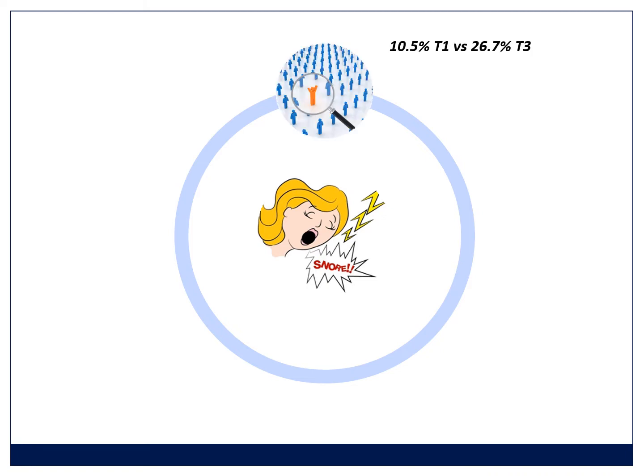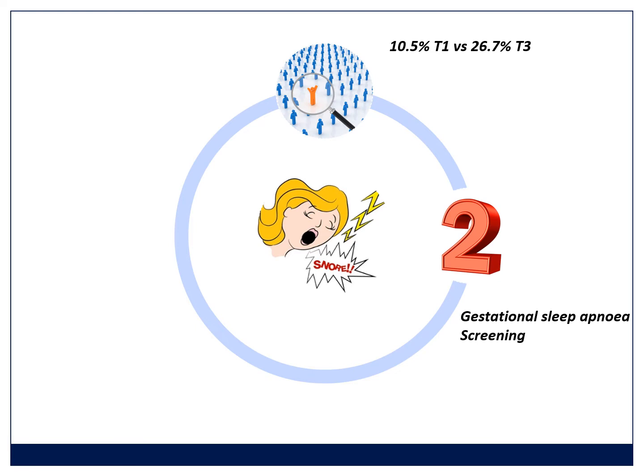One extra risk I want to mention is that these patients get gestational sleep apnea. Obesity is an important risk factor for obstructive sleep apnea. This is about 10% in the first trimester in obese patients, but it moves up to about a quarter of patients by the third trimester. In the non-overweight pregnancy, the prevalence is about 8%, whereas in a BMI of over 40, it's about a quarter.